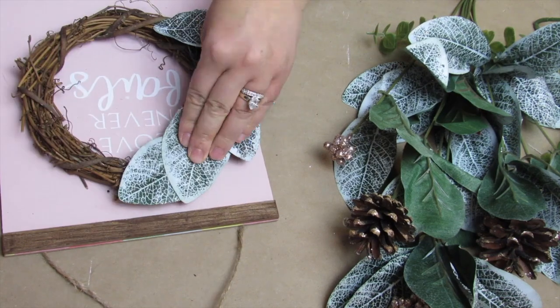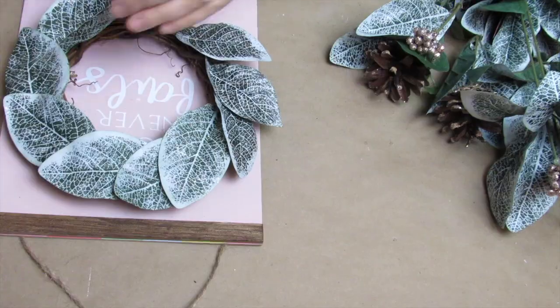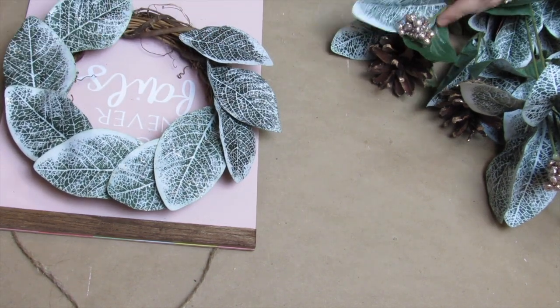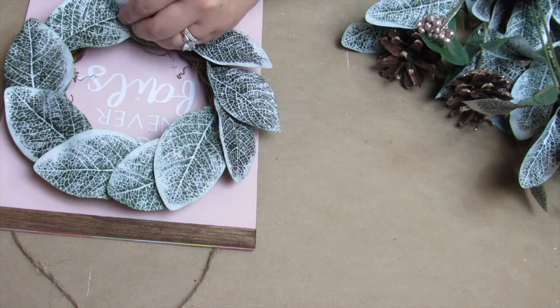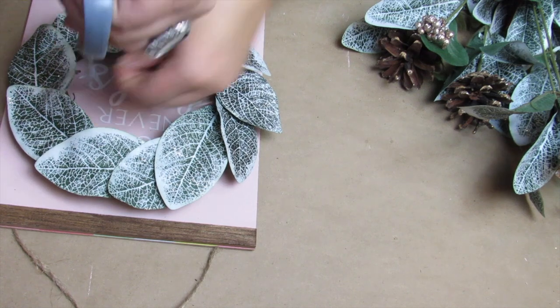Once I have everything hot glued, I'm going to take my scissors and just trim any extra sprigs from that grapevine wreath, making sure that I can see the font and that the wreath looks nice and crisp.